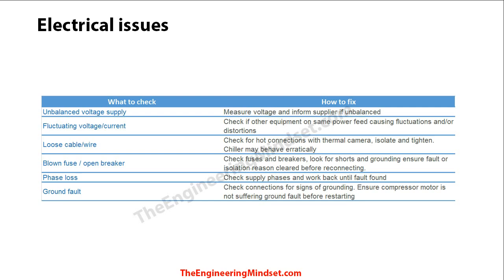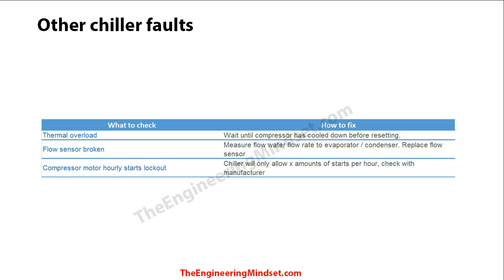Phase loss is also possible — if one phase of a three-phase supply has been lost or disconnected, the chiller will not start. There could also be a ground fault in the motor; the chiller will detect this and shut off for safety. Do not turn it on if a ground fault is suspected, as this can be very expensive to fix. Thermal overload is another cause — if the motor casing temperature gets too high, the chiller will cut out and will not restart until the temperature drops below the threshold.